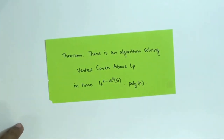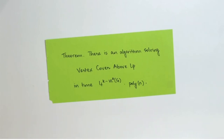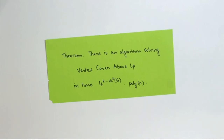The LP opt is a stronger lower bound than the maximum matching size — it's always at least the size of a maximum matching. So parameterizing above a higher lower bound gives a smaller parameter. We want to see if vertex cover above LP is FPT. The main result we want to prove is that there is an algorithm running in 4^(k - LP opt) with polynomial overhead. Remarkably, many other problems — not even graph problems — reduce to vertex cover parameterized by k minus vc-opt.